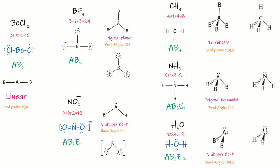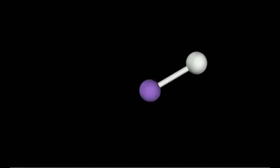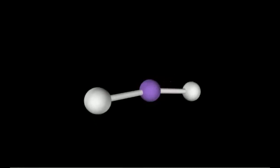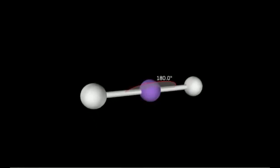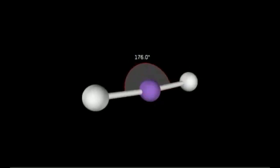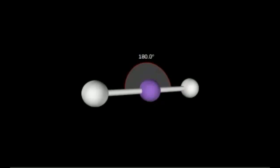Now I will show you all these molecules in 3D rotation so you will easily understand. Here is the 3D model. Here is the central atom. If we have two bonded atoms, it is AB₂, and the bond angle between these two atoms is 180°. It is linear.